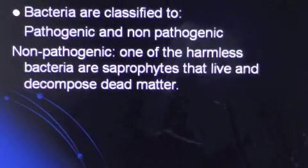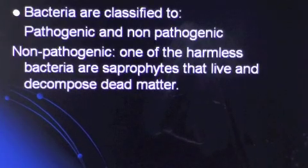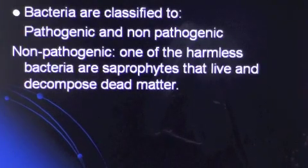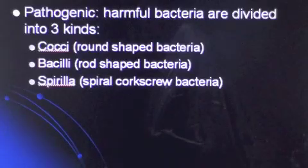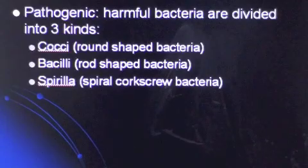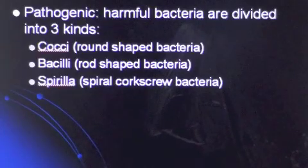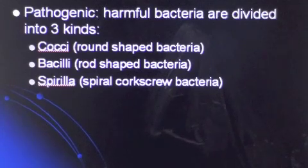Bacteria are classified as pathogenic and non-pathogenic. Non-pathogenic bacteria are harmless bacteria that live and decompose dead matter. Pathogenic harmful bacteria are divided into three kinds: cocci (round-shaped), bacilli (rod-shaped), and spirula (spiral corkscrew-shaped bacteria).